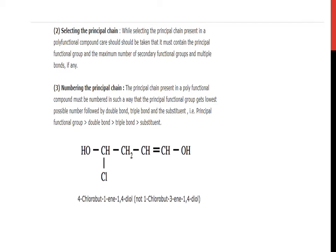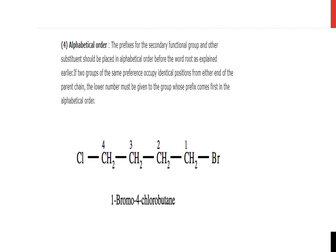That is: principal functional group, then double bond, then triple bond, and then substituent. First of all, preference will be given to the principal functional group. For example, here you are given an example: HO-CH2-CH=CH-CH2-Cl. Here, OH is twice and CL is once. So, it will be 4-chlorobut-1-ene-1,4-diol, and it will not be written as 1-chlorobut-3-ene-1,4-diol.